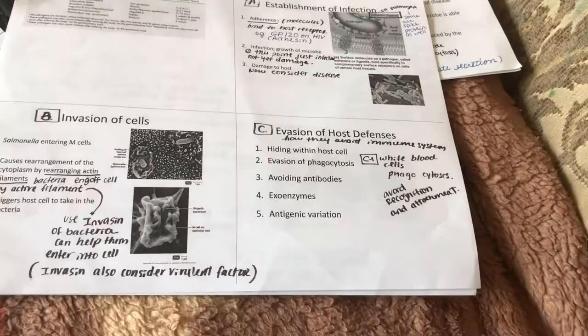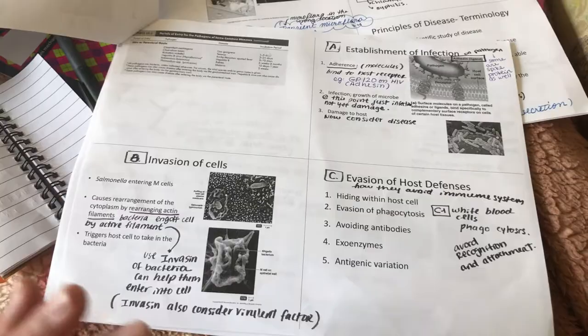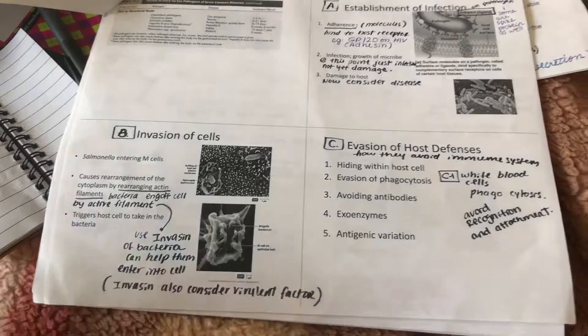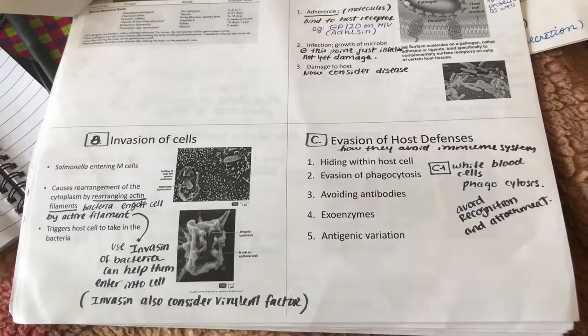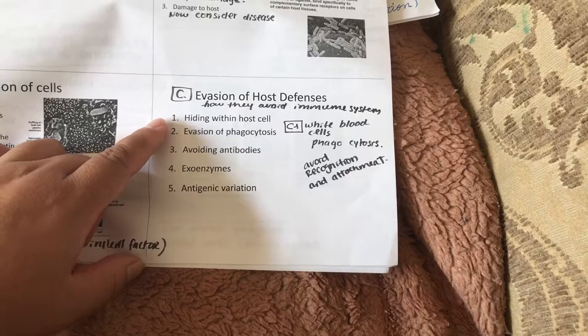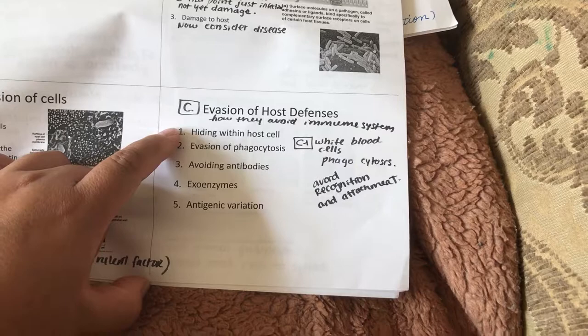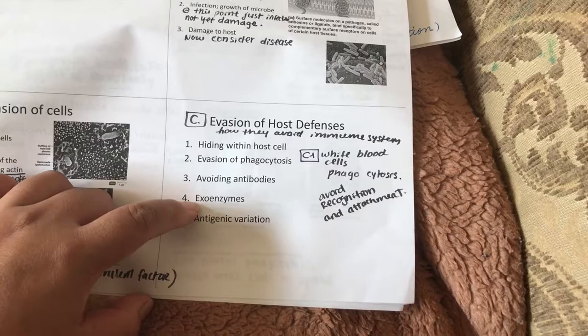When I group things, it clicks to my brain a lot better and I don't have to spend as much time studying. I also read the book, but just the section covered in lecture — I don't waste time reading more than necessary because the textbook has so much information. I label sections A, B, C, and category C has five subcategories: hiding within host cell, phagocytosis avoidance, antibody, exo enzymes, and antigen variation.